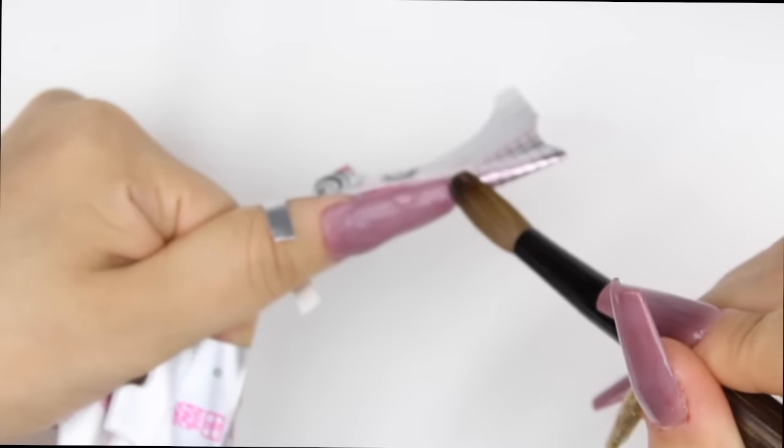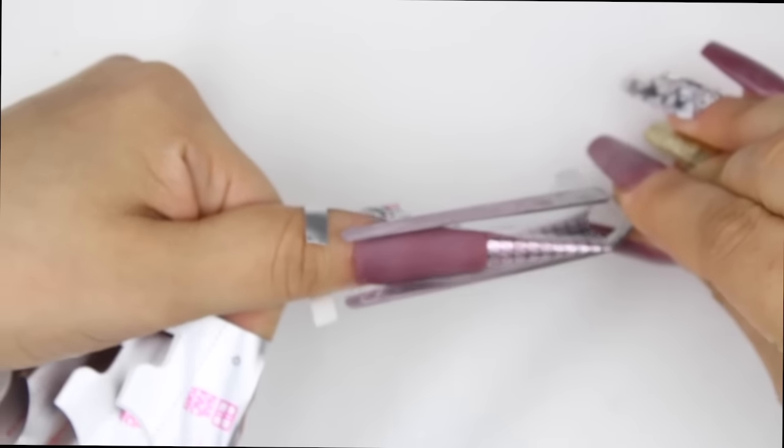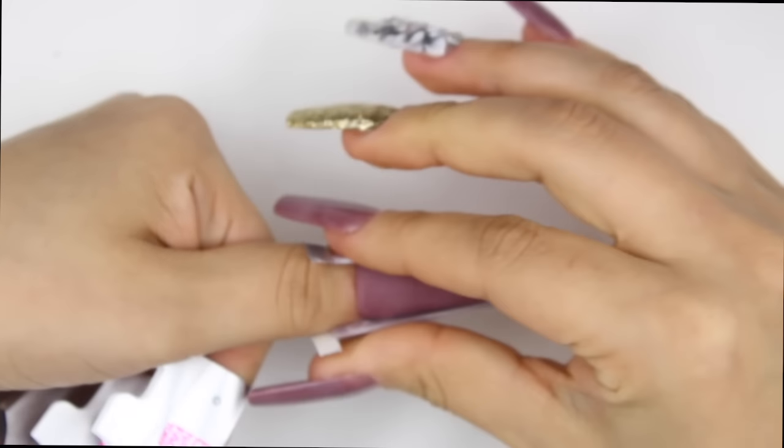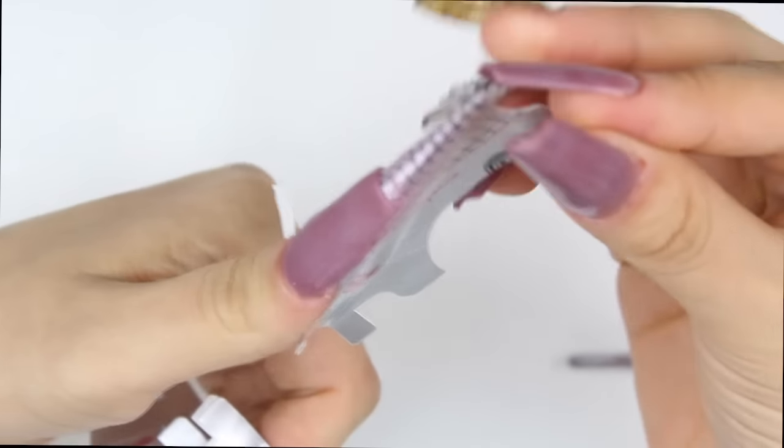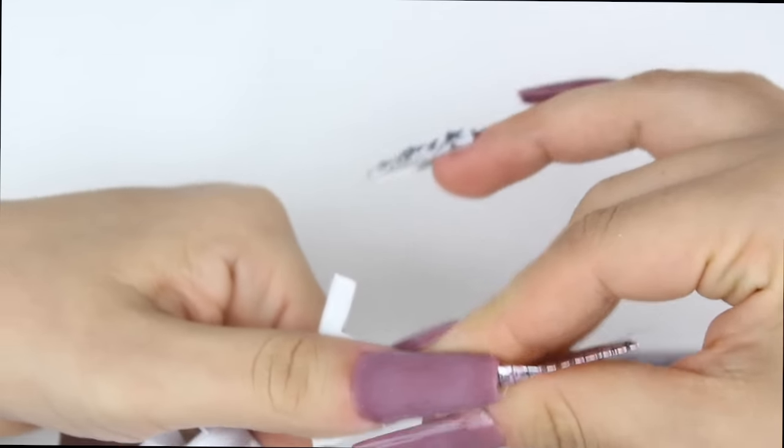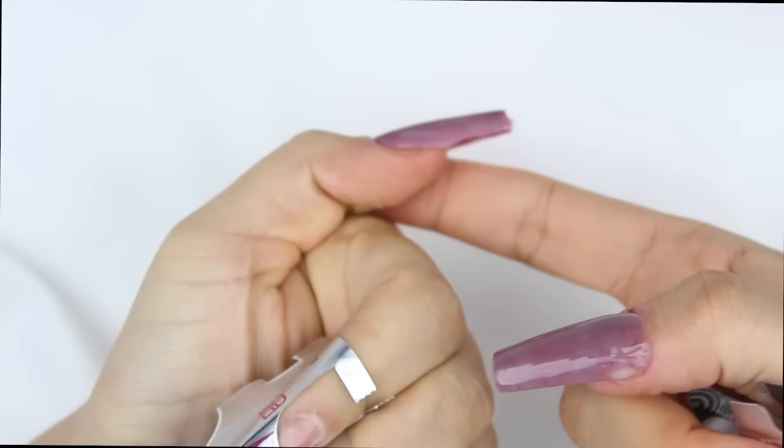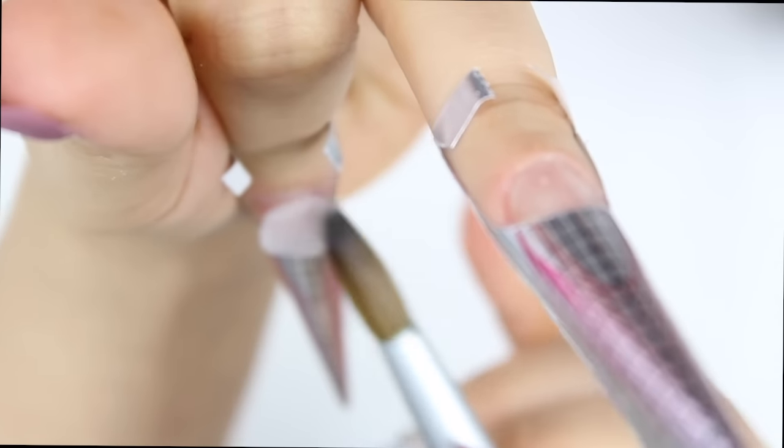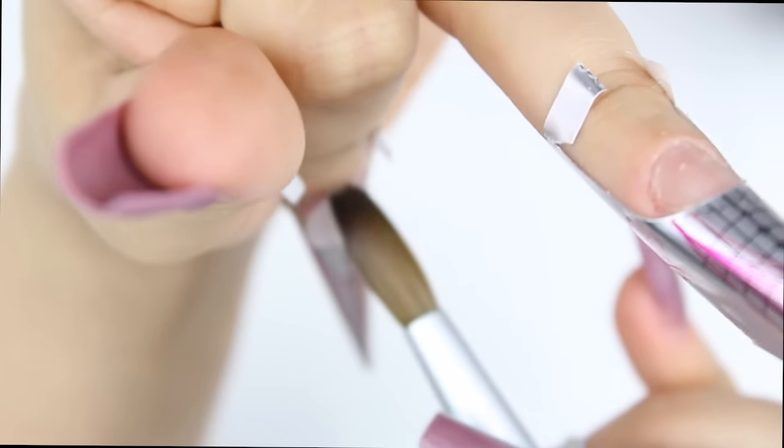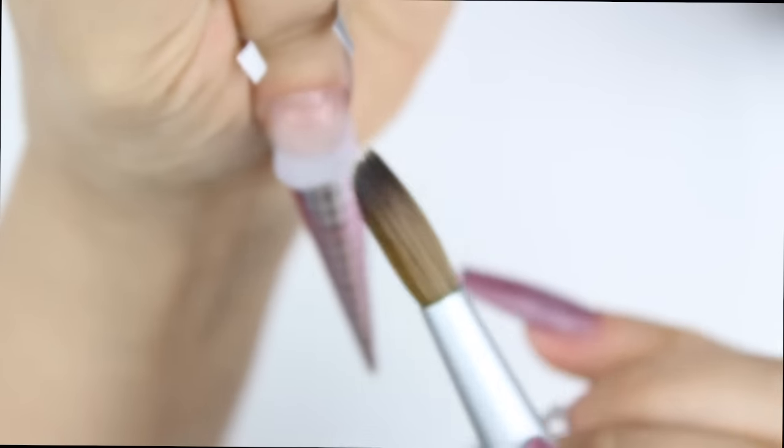Once I'm done, before it sets completely, I'm gonna pinch the nail. You know to pinch the nail when it isn't so sticky and starts losing its shine. I pinch because we want that C curve. I put berry on the thumb, pointer finger, and pinky. On the middle finger and ring finger I'm using clear acrylic.